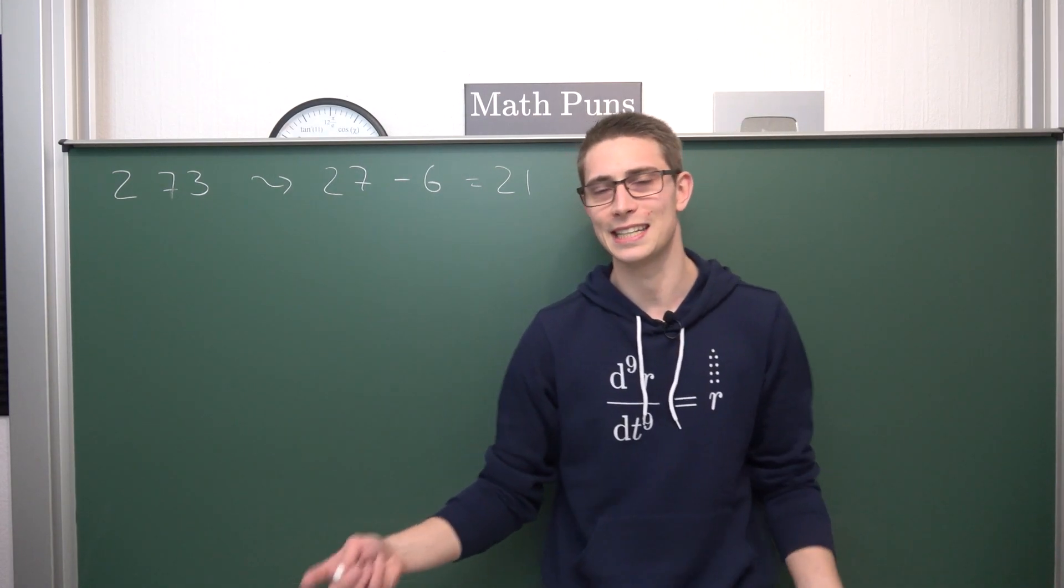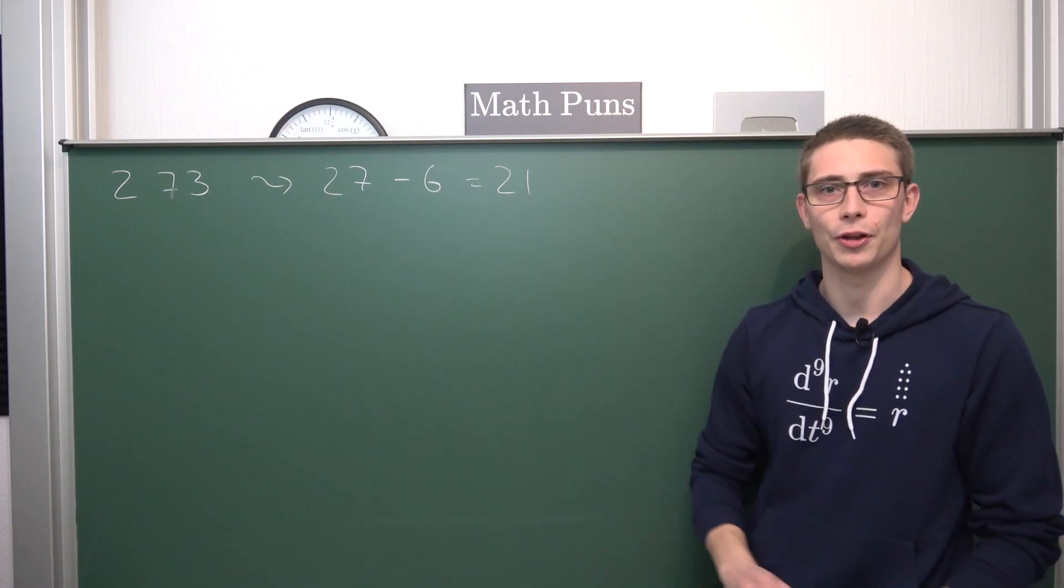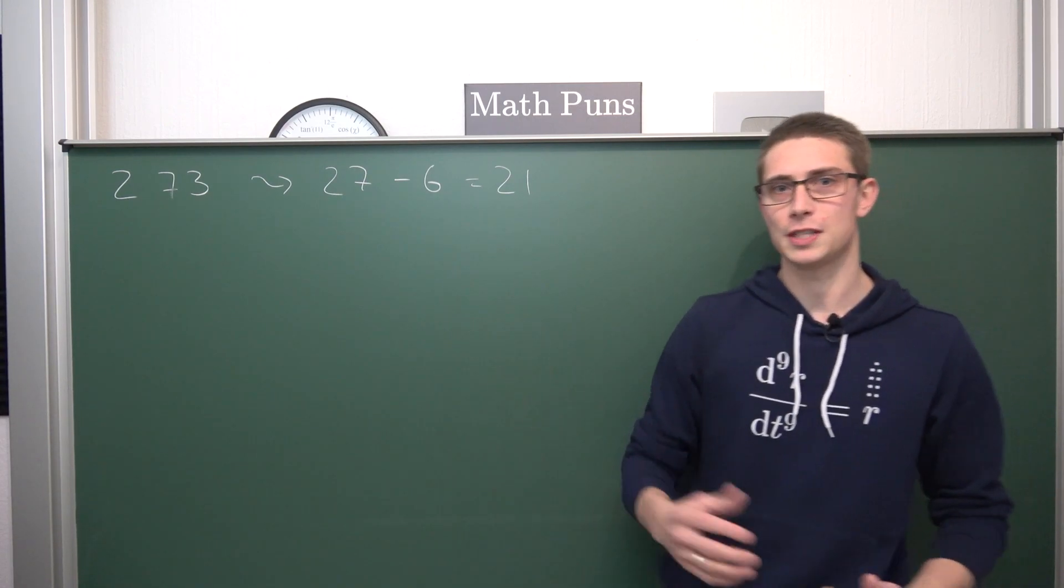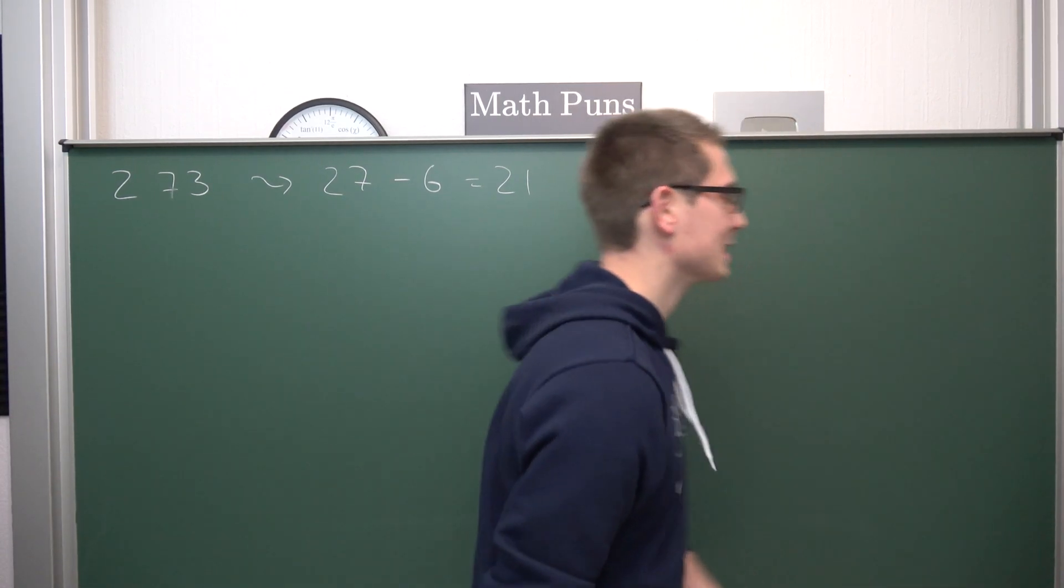This is even easier to remember than the digit sum thing or the alternating digit sum theorem for divisibility by 11. Let us take a look at another example.